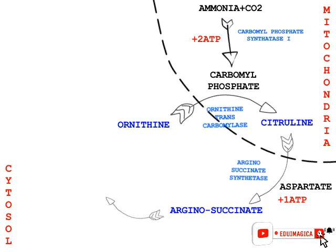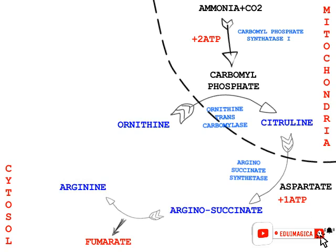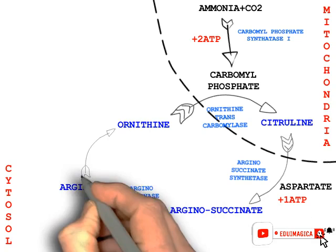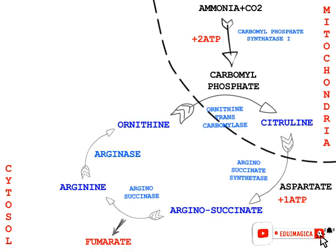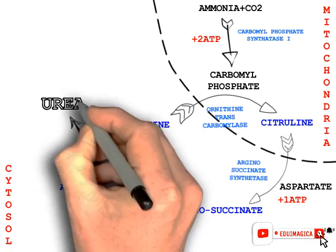Then argininosuccinate gets converted into two products: fumarate and arginine, by the help of the enzyme argininosuccinase. Finally, arginine gets converted into ornithine by the help of the enzyme arginase, and urea is released as a byproduct. This urea is then transported to the kidney for excretion.